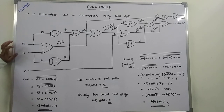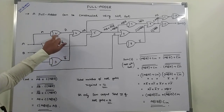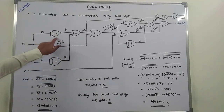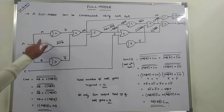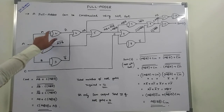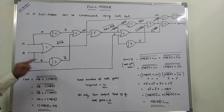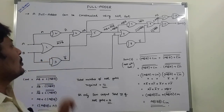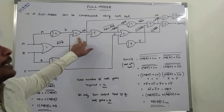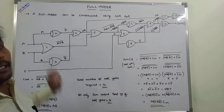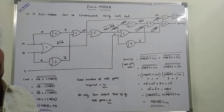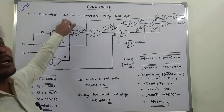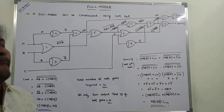To implement the full adder using NAND gates: first, we take two inputs A and B — these two inputs are passed to NAND gate 1, giving output (A+B)'. The second NAND gate takes input A alone, giving output A'. The third NAND gate takes input B alone, giving output B'. The fourth NAND gate takes the outputs of the second and third NAND gates — (A'+B')' — which equals AB.